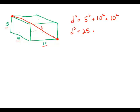5 squared plus 10 squared plus 10 squared. d squared equals 225, and as it happens, that's a perfect square. So d equals 15, and this is answer choice A.